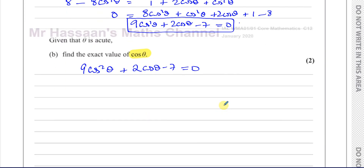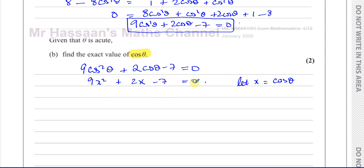To solve this, let x = cos θ, giving us 9x² + 2x − 7 = 0. We can factorize by splitting the middle term — some people call it the window method.